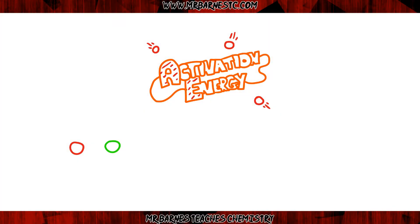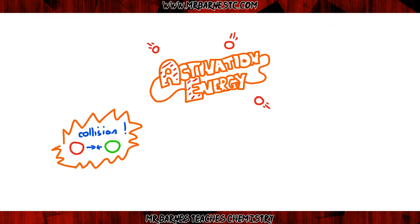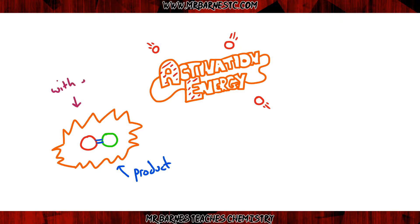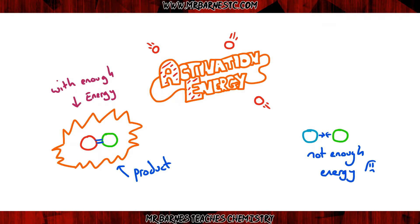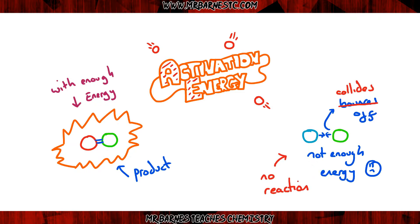You should know by now that for a reaction to occur you have to have a collision. If the collision has enough energy, that reaction will occur and you'll turn your reactants into a product. But there must be enough energy. If you have two reactants that don't have enough energy, they'll collide but because there's not enough energy no reaction occurs — they just bounce off each other.